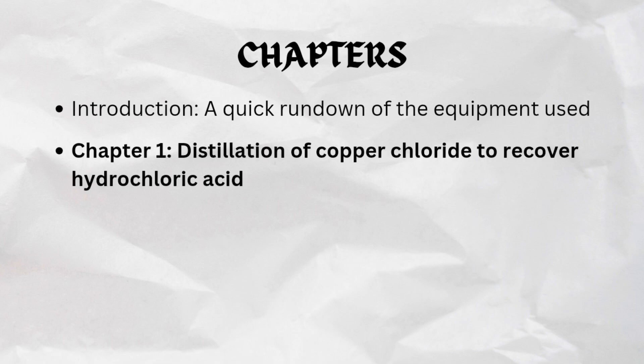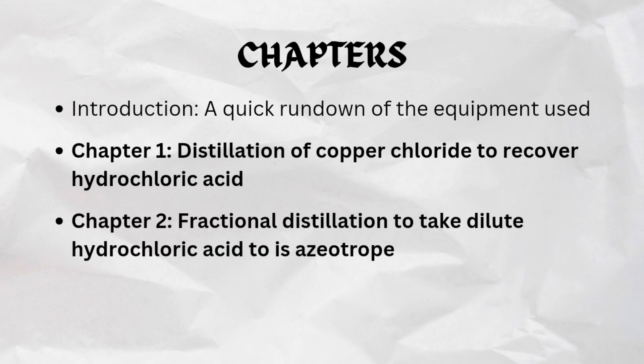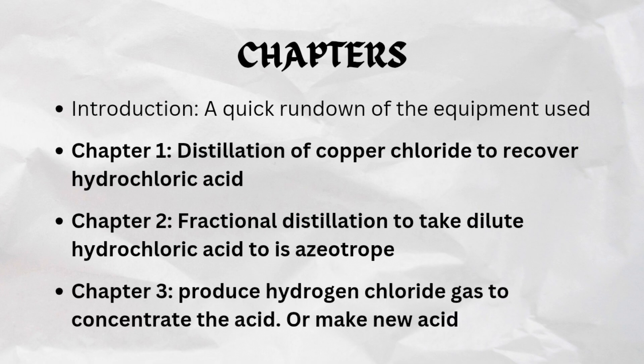Chapter 1 is on recovering hydrochloric acid from copper chloride using distillation. I'll also explain some of the challenges of doing so. Chapter 2 will be on fractional distillation of the recovered acid to bring it to 20%. And finally, chapter 3 — I'll show you how to generate hydrogen chloride gas to bubble through the recovered acid to take it beyond its azeotrope. You can also use this method to make fresh hydrochloric acid.